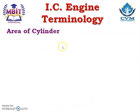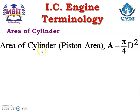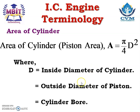Area of cylinder or area of piston equals capital A, which equals pi by 4 multiplied by D square. Where capital D is the inside diameter of cylinder, or outside diameter of piston, also known as the cylinder bore.